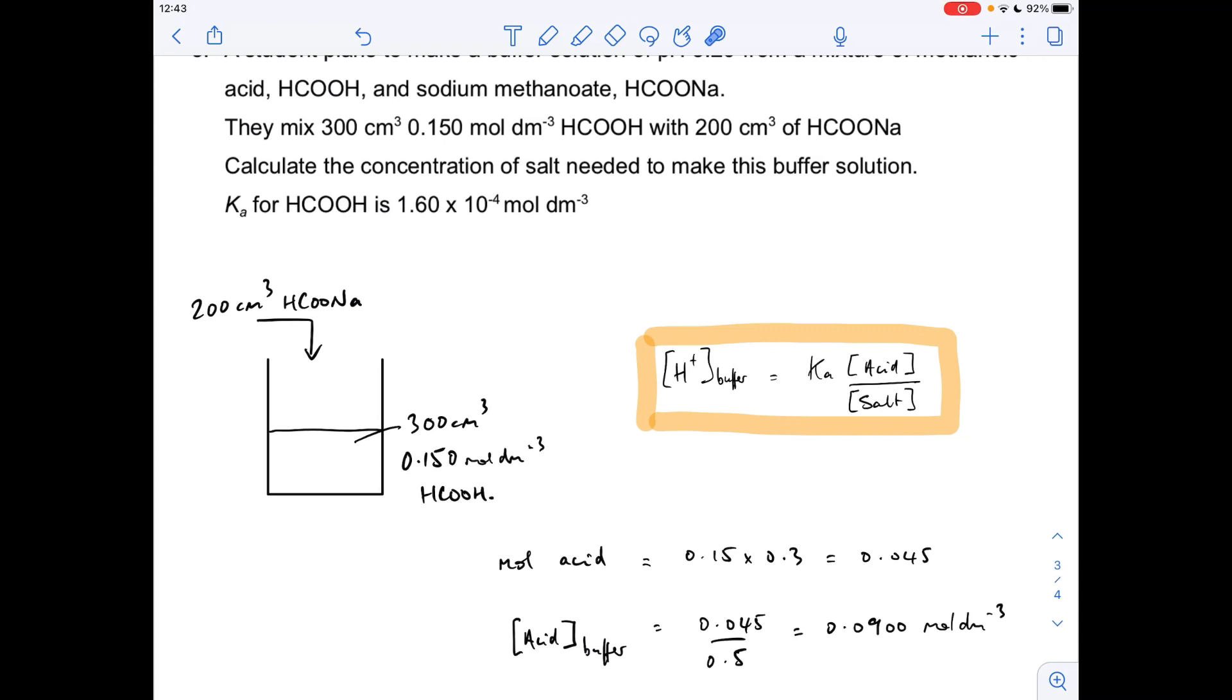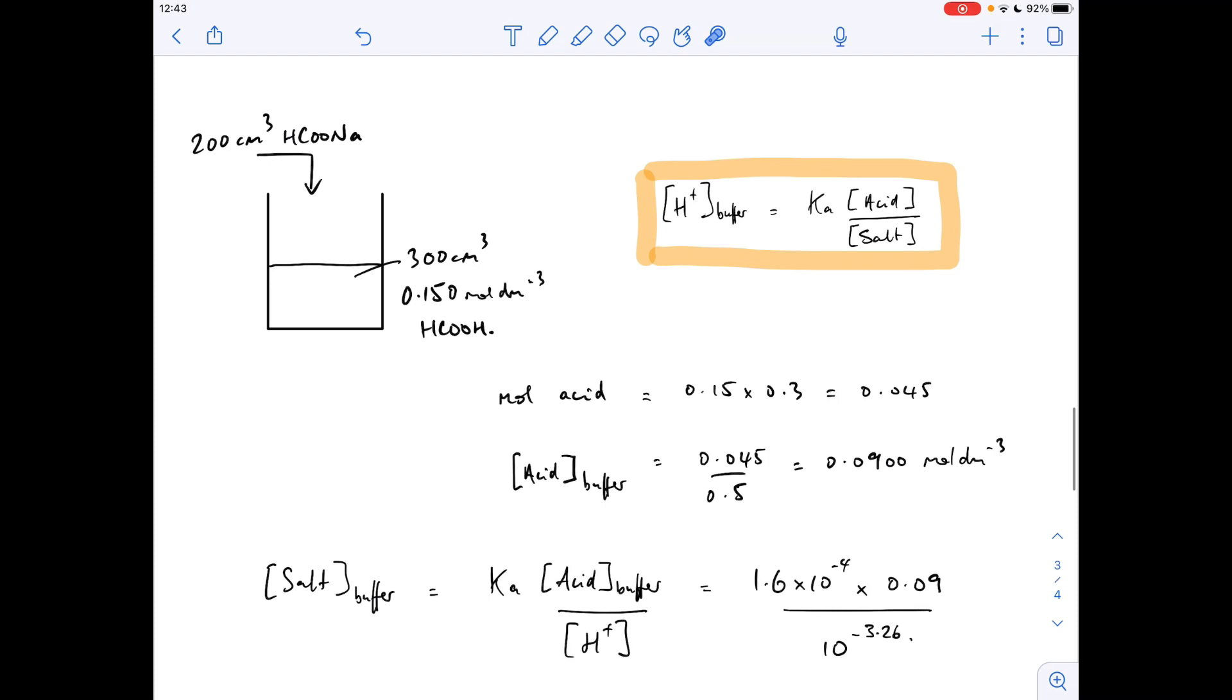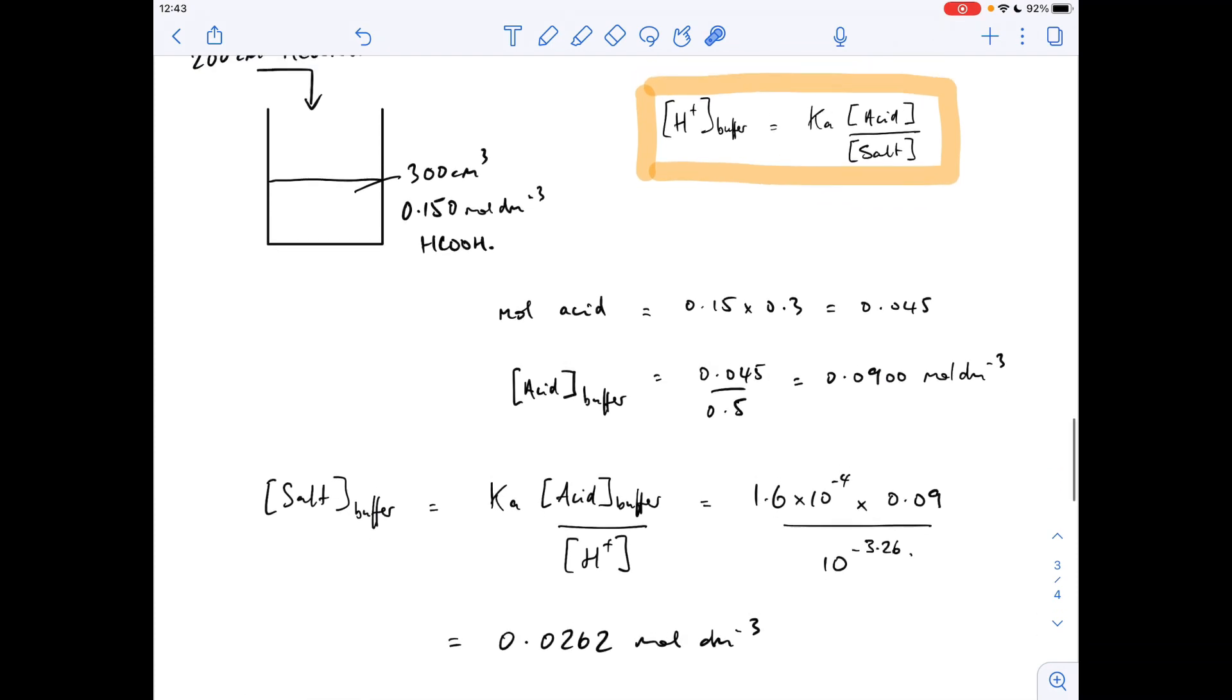So to get the concentration of the salt in the buffer, we're going to rearrange acid over salt, so salt up there, H+ down there, and then put the numbers in. 0.0262 moles per decimeter cubed - that's what the concentration of the salt needs to be for the buffer.